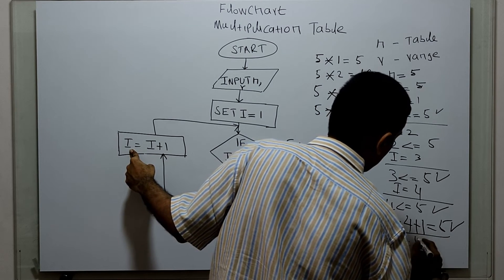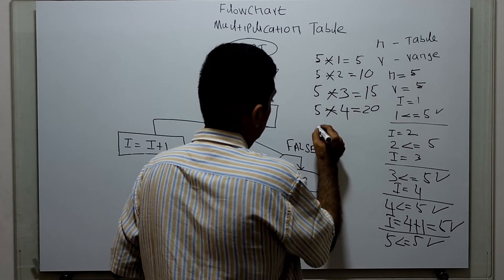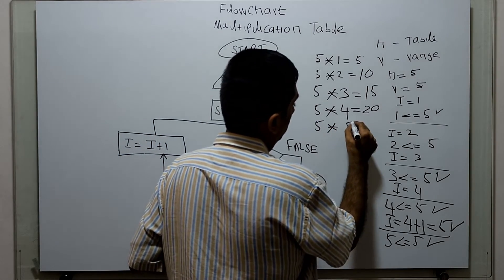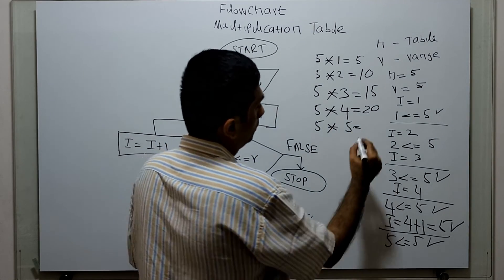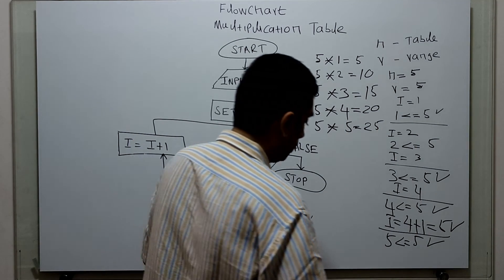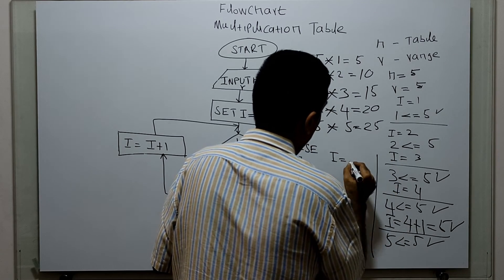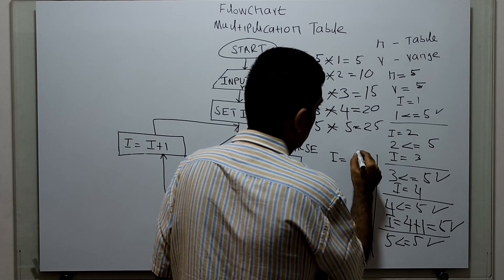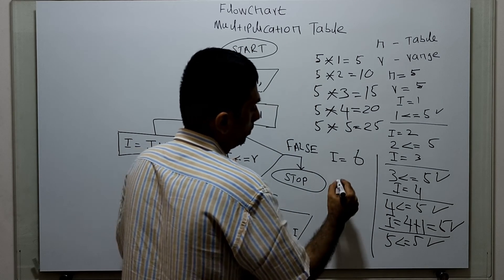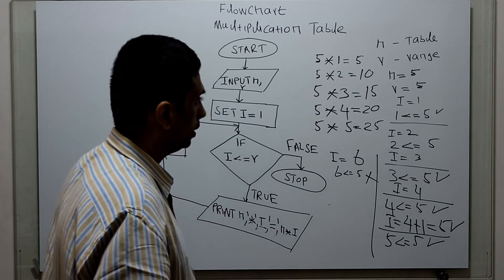Checking the condition: 5 less than or equal to 5 — true. Printing: n is 5, star is the string, i value is 5, equal to symbol, n times i which is 25. Now incrementing i by 1, i equal to 5 plus 1 which is 6. Checking the condition: 6 less than or equal to 5 is false — control will come out and the flowchart ends.